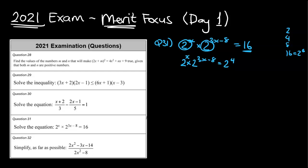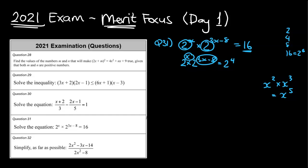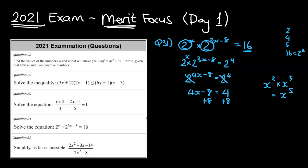When multiplying powers with the same base, we add the exponents — like x squared times x cubed equals x to the fifth. Applying that here: x + (3x − 8) = 4x − 8. So 2^(4x − 8) = 2^4. Cancelling the base 2 leaves 4x − 8 = 4. Adding 8 to both sides: 4x = 12. Dividing by 4: x = 3.